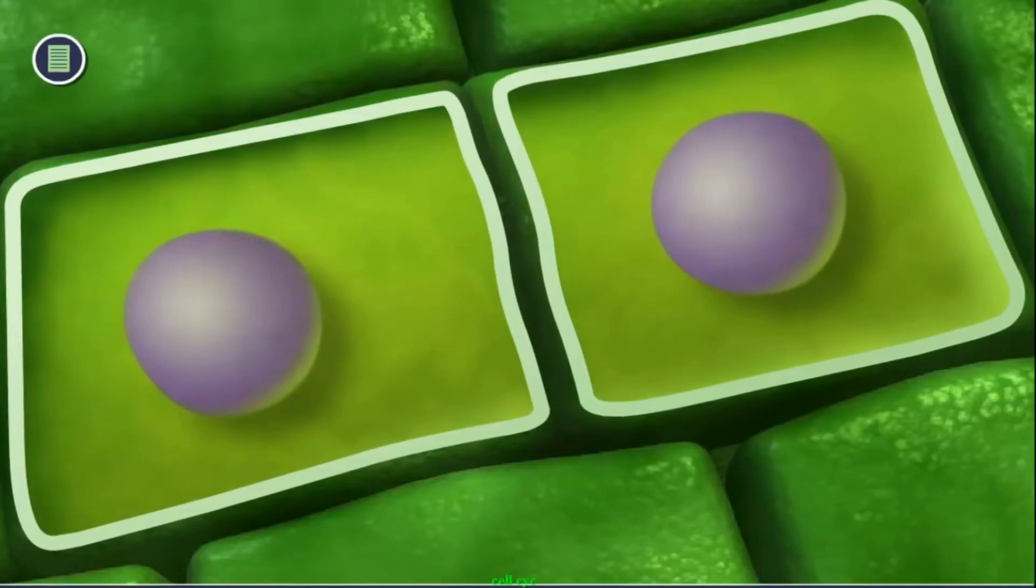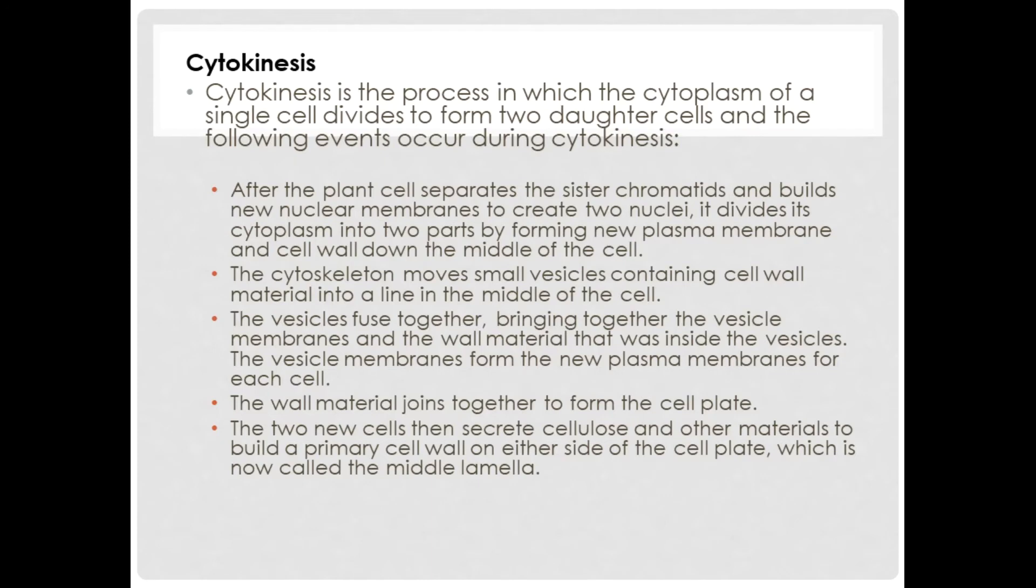The wall material joins together to form the cell plate. The two new cells then secrete cellulose and other material to build a primary cell wall on the other side of the cell plate, which is now called the middle lamella.